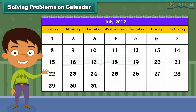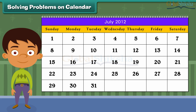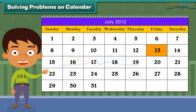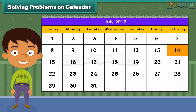Solving problems on a calendar. Do you know that a calendar solves many problems? You can easily read the days and dates on a calendar. Let us look at the month of July for the year 2012. Can you tell on which day does this month end? Yes, it's Tuesday. What day is it on 13th July? It is Friday. What is the date on the second Saturday? It is 14th July.